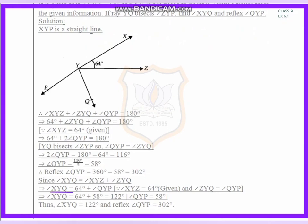Since angle XYQ equals angle XYZ plus angle ZYQ, here we have angle XYZ equals 64 and both angles are the same, so angle XYQ equals 64 plus 58. We get the result equals 122. Thus angle XYQ is 122 and reflex angle XYP is 302.